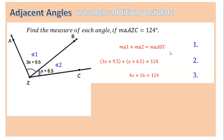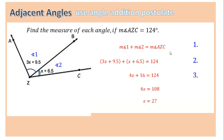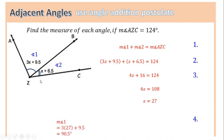Combine like terms: 3x plus x is 4x, and 9.5 plus 6.5 is 16. So 4x plus 16 equals 124. Subtract 16 from each side — 124 minus 16 gives 108. Then divide by 4 to get x equals 27. Substituting 27 back in: angle 1 is 3 times 27 plus 9.5, giving 90.5 degrees. Angle 2 is 27 plus 6.5, giving 33.5 degrees. Adding these gives 124, confirming our answer.